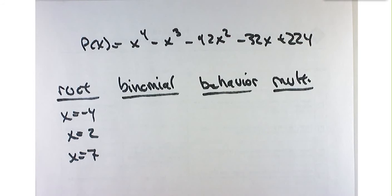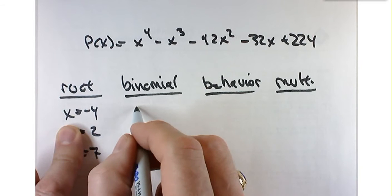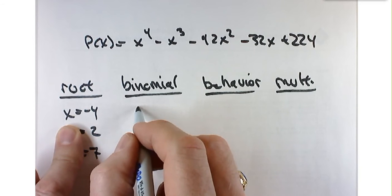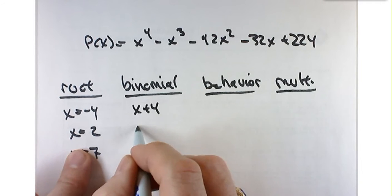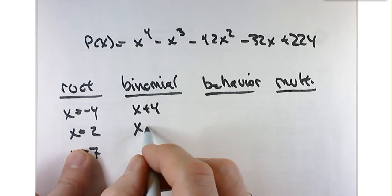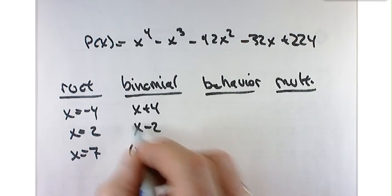Let's log that in. Now, x equals negative 4 corresponds to what is a binomial. So x plus 4, and then keep going. Good, so those are all our binomials.